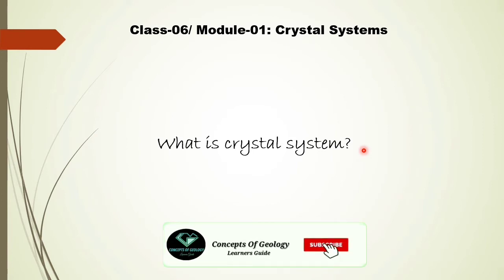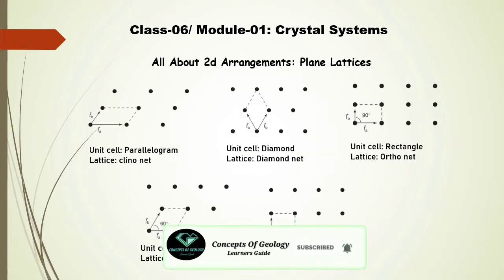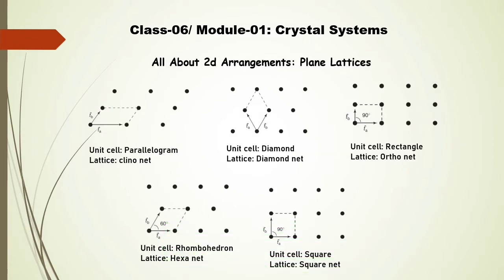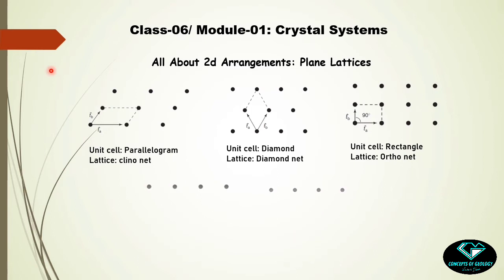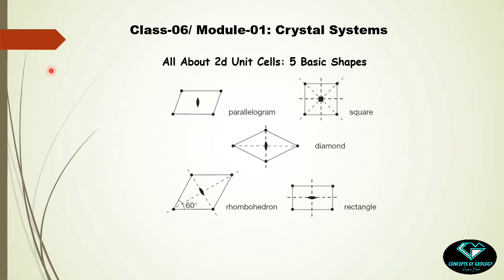Before starting today's topic, we need a summary of what we have learned till now. In the beginning, we learned about the two-dimensional arrangement of motifs, which we call plane lattices. We had five plane lattices and their corresponding unit cell shapes in two dimensions - five basic unit cell shapes in two-dimension.